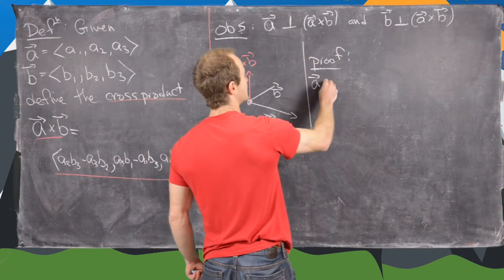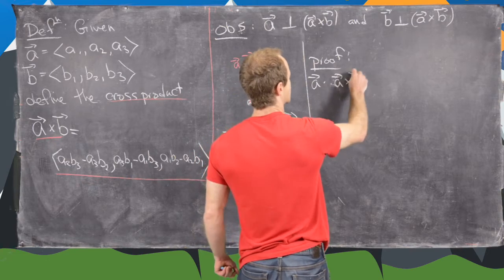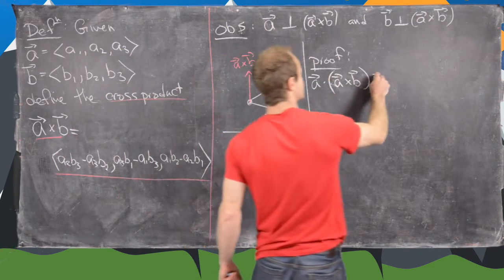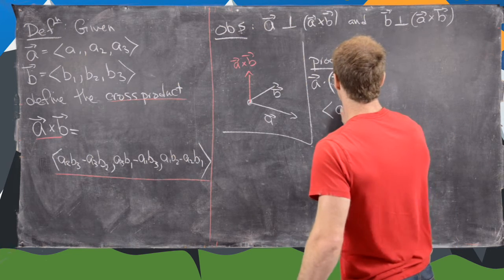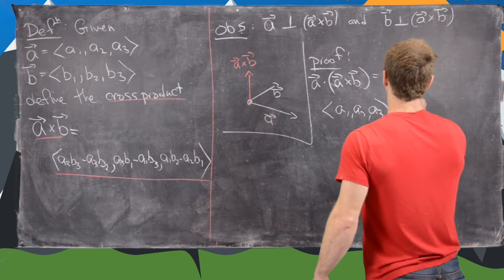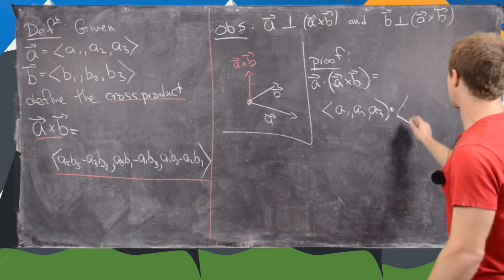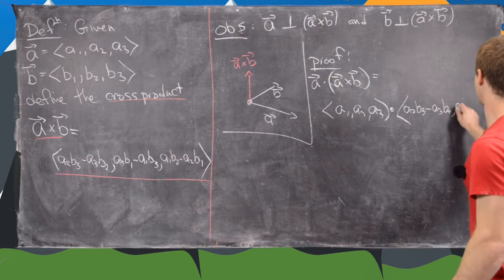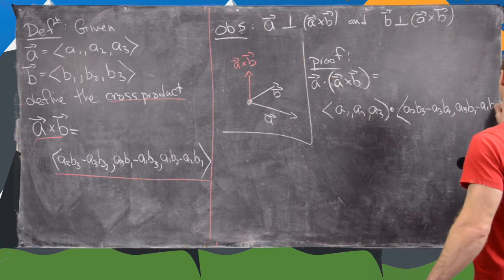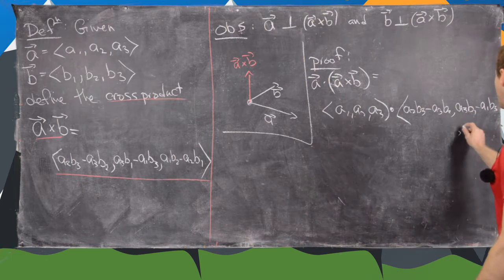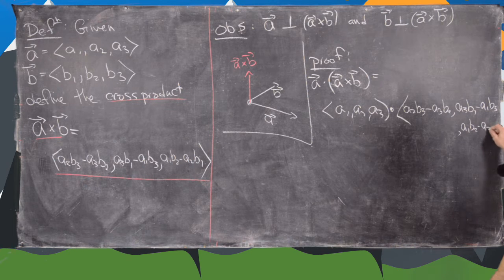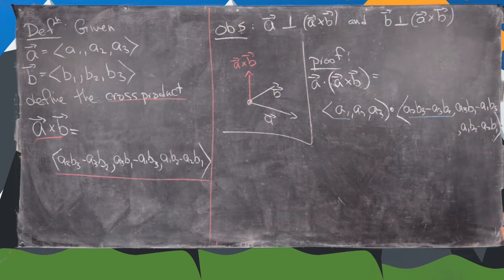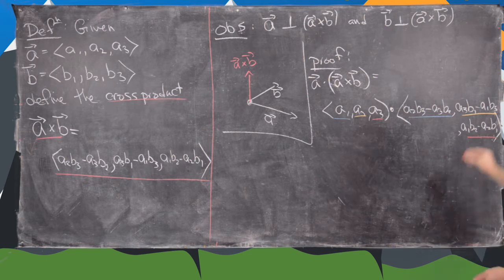We're going to take the dot product a · (a cross b) and show we get zero. So this is a1, a2, a3 dotted with the cross product: a2 b3 minus a3 b2 as the first component, a3 b1 minus a1 b3 as the second component, and a1 b2 minus a2 b1 as the third. We multiply each corresponding pair of terms and add them together.